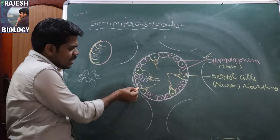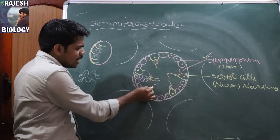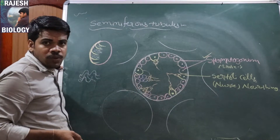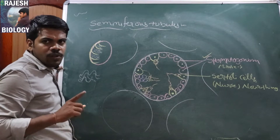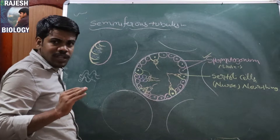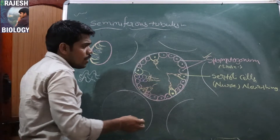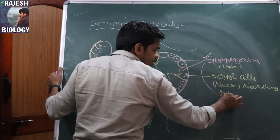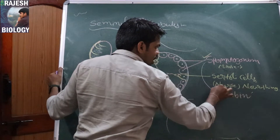Sertoli cells give nourishment to the adjacent mother cells and to the spermatogonial cells as well — that is why they are called nourishing cells. The function of Sertoli cells is nourishment. But not only nourishment — Sertoli cells also release a hormone called Inhibin.